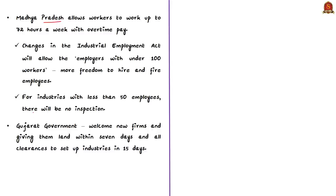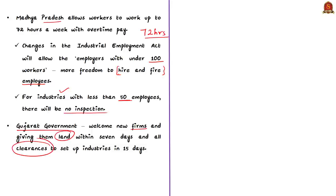The state government of Madhya Pradesh allows workers to work up to 72 hours a week with overtime payment. Recent changes in the Industrial Employment Act will allow employers with under 100 workers more freedom to hire and fire employees, and for industries with less than 50 employees there will be no inspection by the Labor Department. The Gujarat government will welcome new firms, including firms from China, by giving land within 7 days and all required clearances within 15 days, providing relief from all labor-related laws for about 200 days from the start of manufacturing.